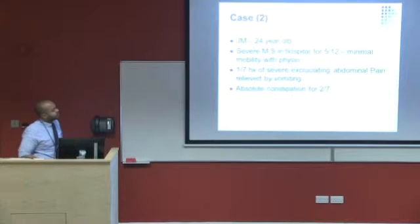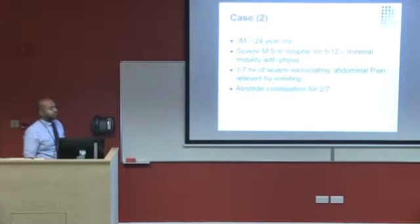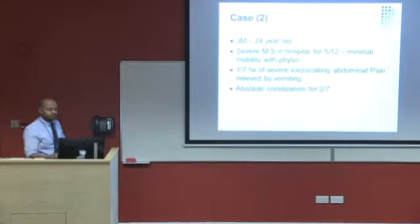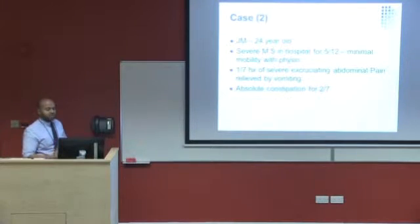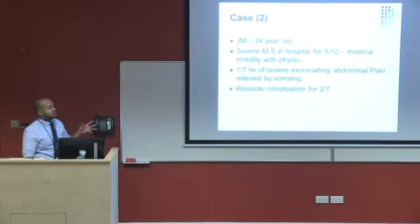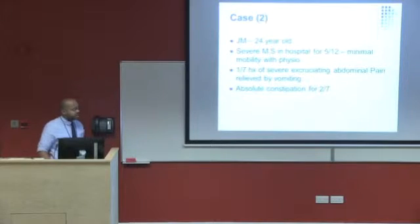The second case is a 24-year-old male we saw last week. He's been in the hospital for five weeks with severe aggressive multiple sclerosis. According to his family, when he first came into the hospital he was completely spastic, but he improved over the course of five months. He had minimal mobility only with physio support and was not mobilized independently. We were asked to see him because he developed a one-day history of severe abdominal pain that came suddenly, and during the episodes he gets really sweaty, vomits, and then the pain settles. He also has a significant history of constipation since childhood, which the neurologist thought was related to his MS.